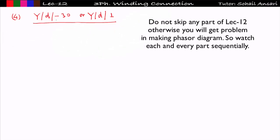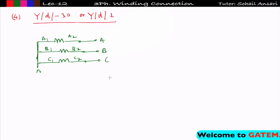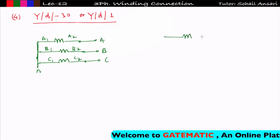Now, how will I draw the winding connection of YD1? In a star connection, first draw three windings separated and name them A2, A1, B2, B1, and C2, C1. In star connection, short circuit A1, B1, C1 and name it neutral. From A2, B2, and C2 we take supply — this is at A, B, and C respectively. So I draw the three-phase star connection first.